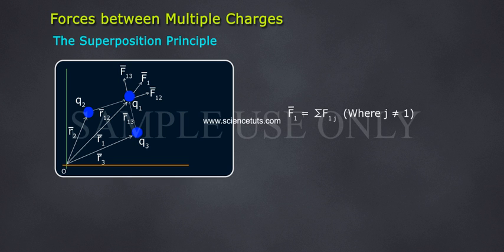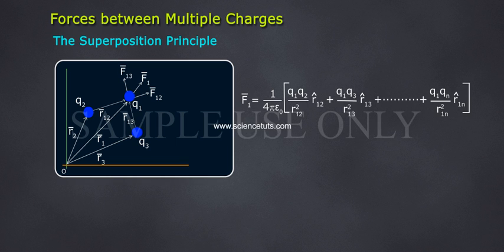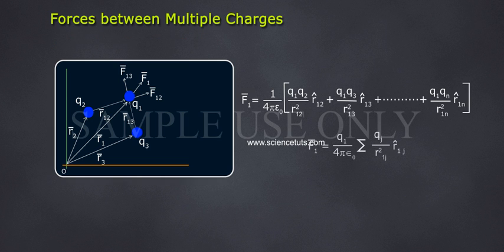Since the charge does not exert a force on itself, combining Coulomb's law with superposition principle, the equation can be written as F1 bar equals 1 by 4 pi epsilon naught into q1 q2 by R1 2 square into R1 2 cap plus q1 q3 by R1 3 square into R1 3 cap and so on plus q1 qn by R1 n square into R1 n cap. F1 bar equals q1 by 4 pi epsilon naught sigma qj by R1 j square R1 j cap.